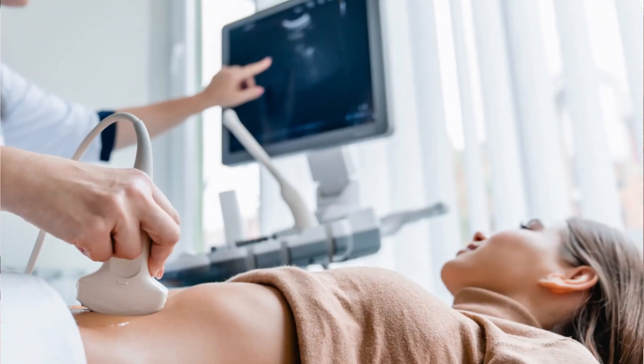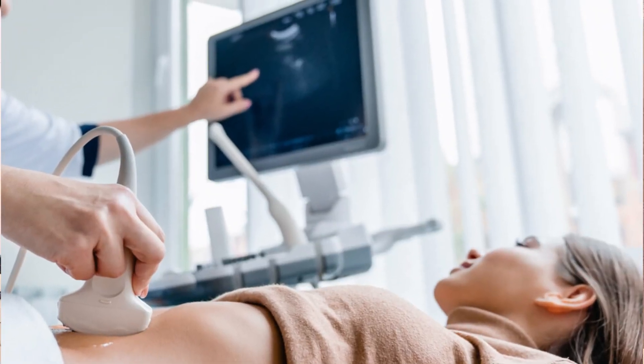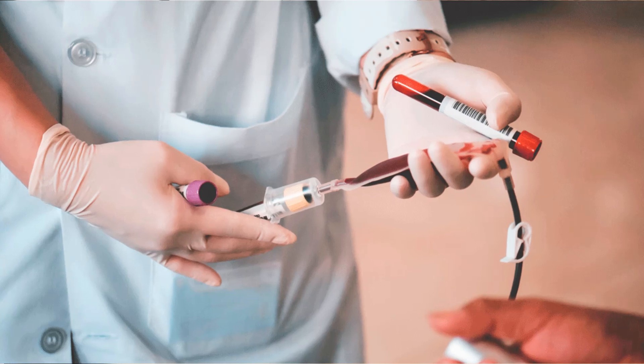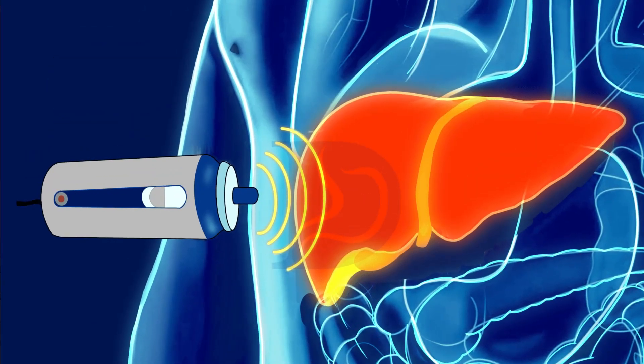How is fatty liver diagnosed? In the first stage, we do an ultrasound of the abdomen. For example, when investigating for kidney stones or gynecological problems and you do an ultrasound, you may incidentally pick up fatty liver. Once fatty liver is identified, you need to do two things: one is a liver function test to assess liver enzymes, and the second is a scan called fibroscan — a very good scan that takes only a few minutes.